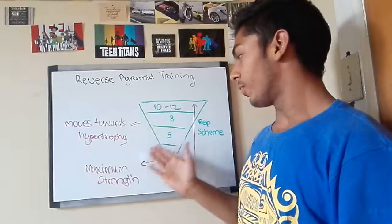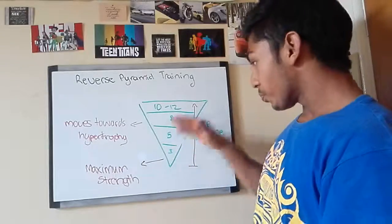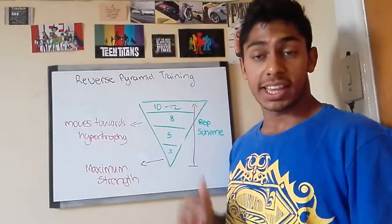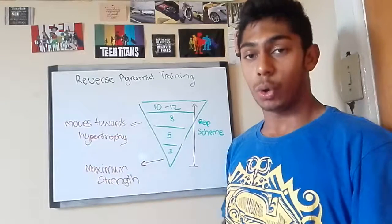As you move up then we start to focus on the hypertrophy area of 10 to 12 reps. In this area you're still staying in that strength and power range of higher weight and lower reps.